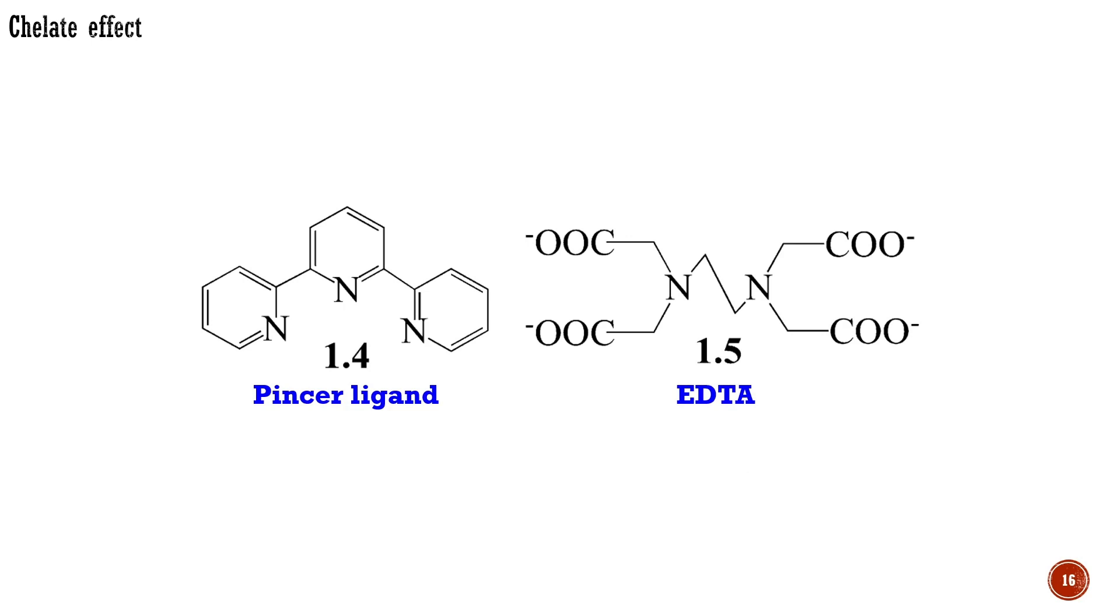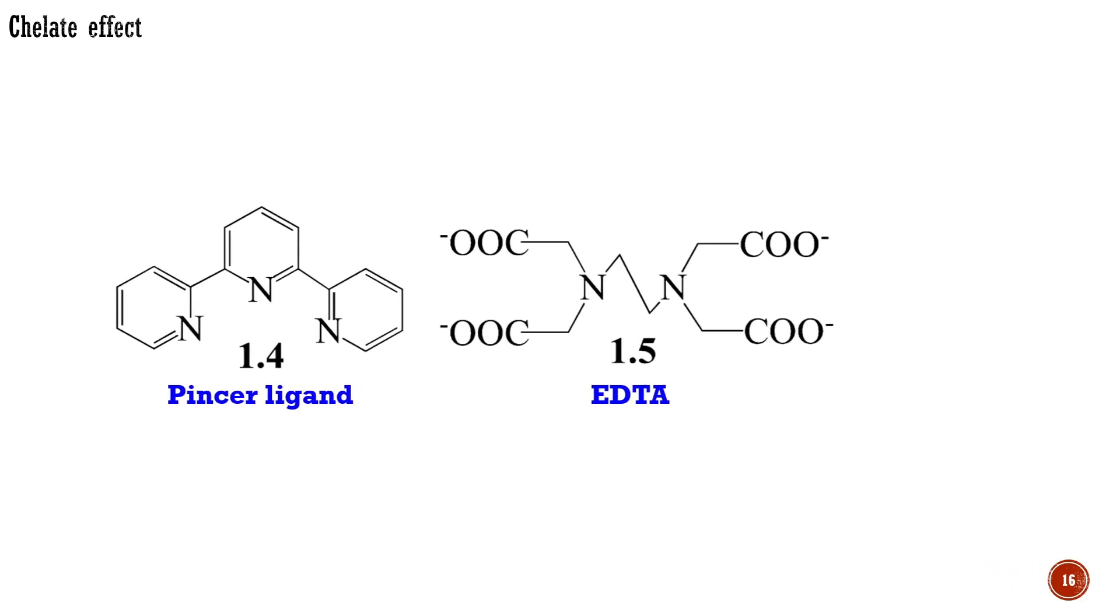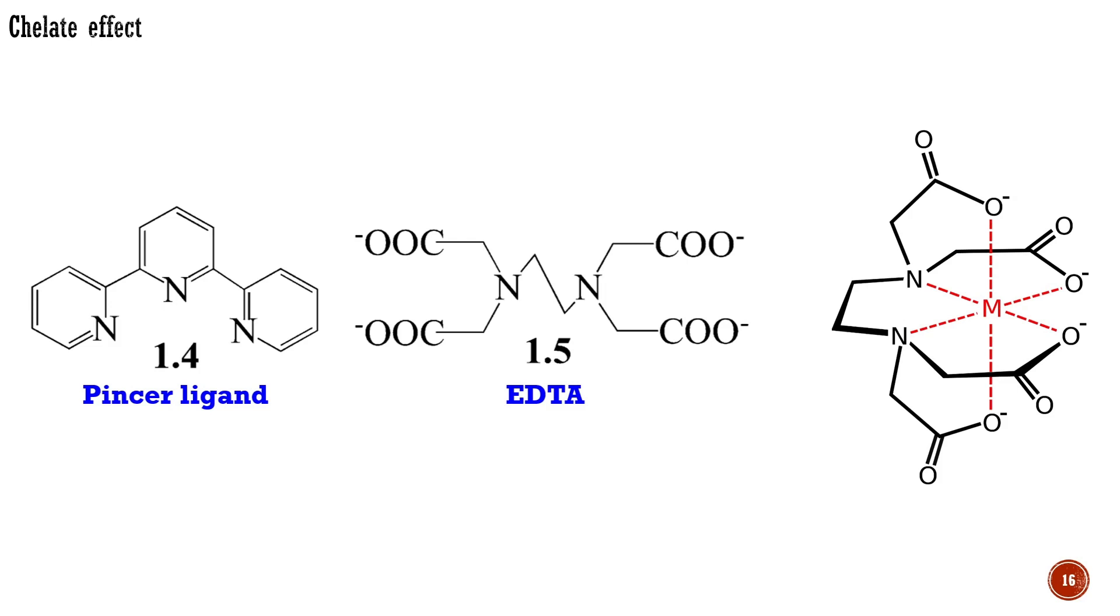Ethylenediamine tetraacetic acid, alternatively known as EDTA, can take up all six sites of an octahedron and thus completely wrap up many different metal ions. As a common food preservative, EDTA binds free metal ions so that they can no longer catalyze aerial oxidation of the foodstuff.